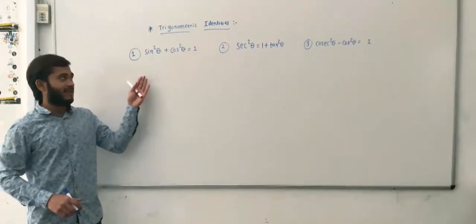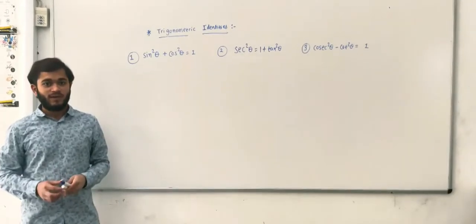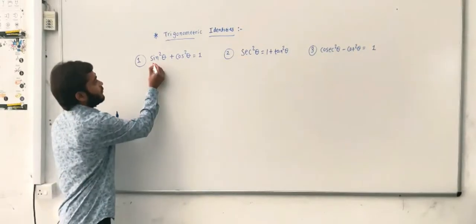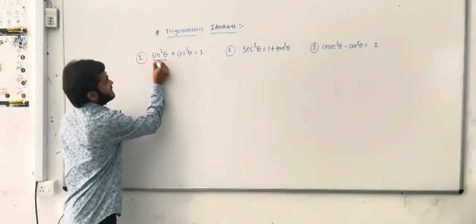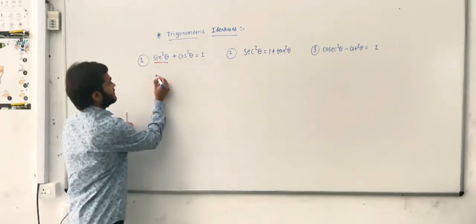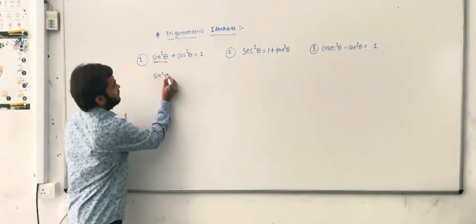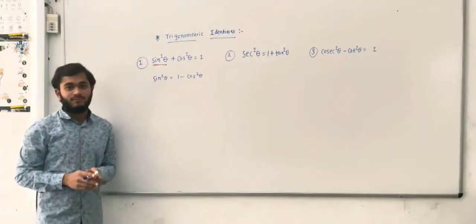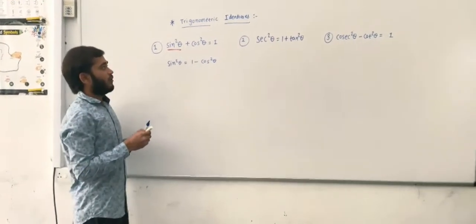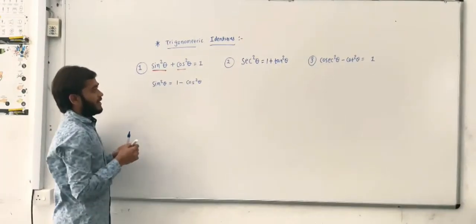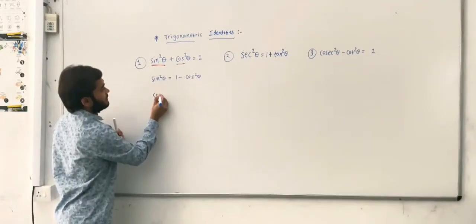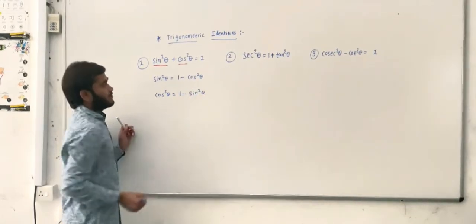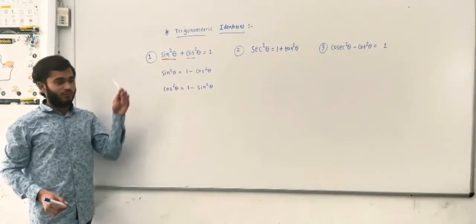There are 3 types of trigonometric identities. The first one is: sin²θ + cos²θ = 1. From this, we can derive that sin²θ = 1 − cos²θ, and also that cos²θ = 1 − sin²θ. So from the first identity, we can make two more formulas.